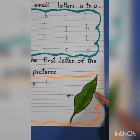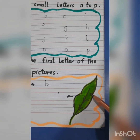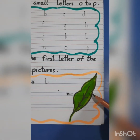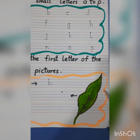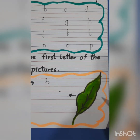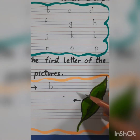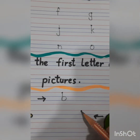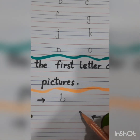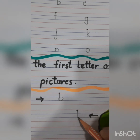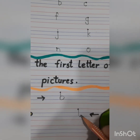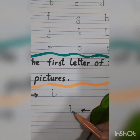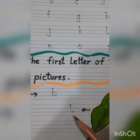Now what is this children? This is a leaf. And the first letter of leaf is L. L is for leaf होता है, then we have to write here small L. Make a standing line and a small turn — make a standing line and a small turn.